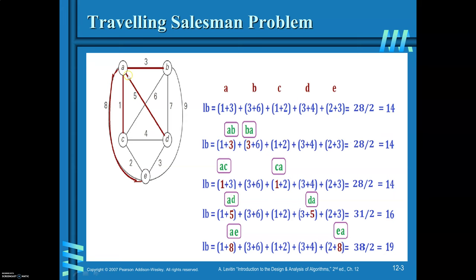In case you decide to go to C, then AC and CA should both be included. If you include those, there is no difference from the initial calculation. Therefore, the lower bound is again equal to 14.